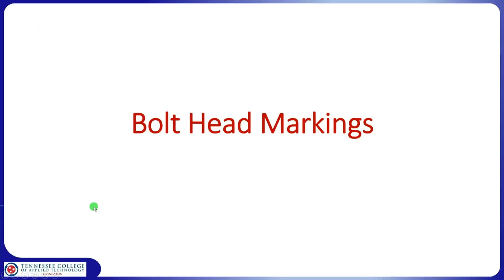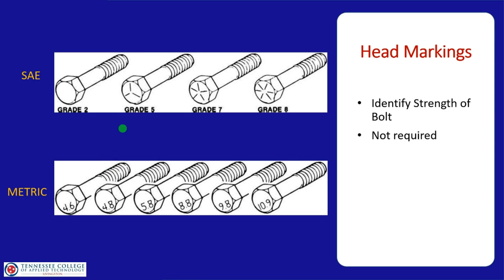Bolt head markings are the second way to identify bolts, and while not foolproof, they're pretty reliable. Head markings identify the strength of a bolt. For standard or SAE bolts, there are different grades — Grade 2, Grade 5, Grade 8 — all corresponding to bolt strength.